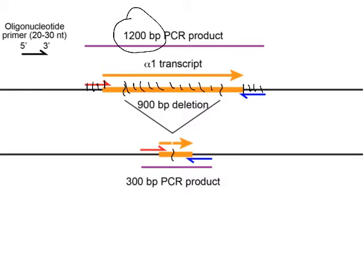If somebody has suffered a deletion of the information in between, we won't get that same size product. We will still get a PCR product, because we still have a forward primer facing a reverse primer close enough for a chain reaction — but now it will be shorter, around 300 base pairs. So in a normal case it's 1,200 base pairs, and in a deletion it's 300 base pairs.